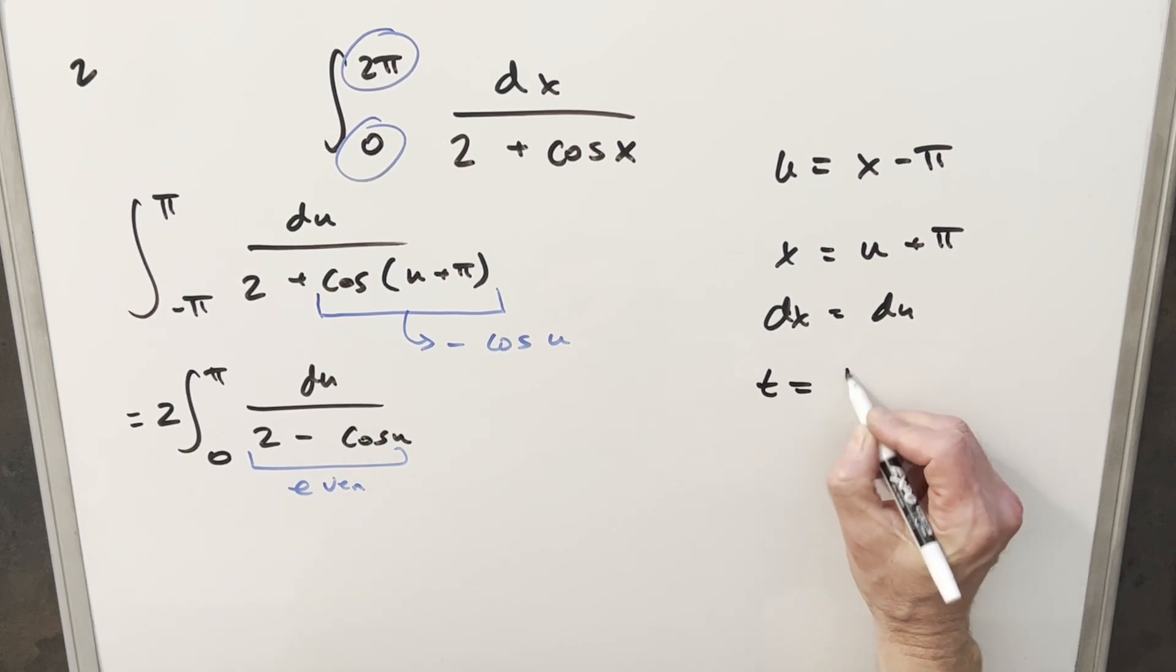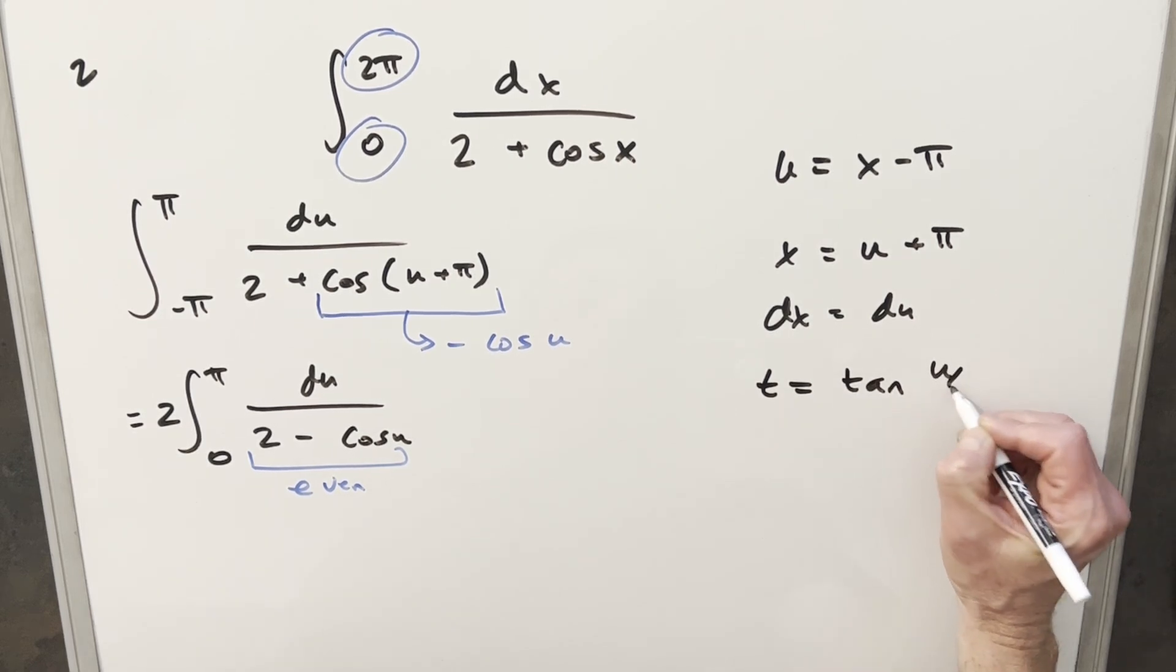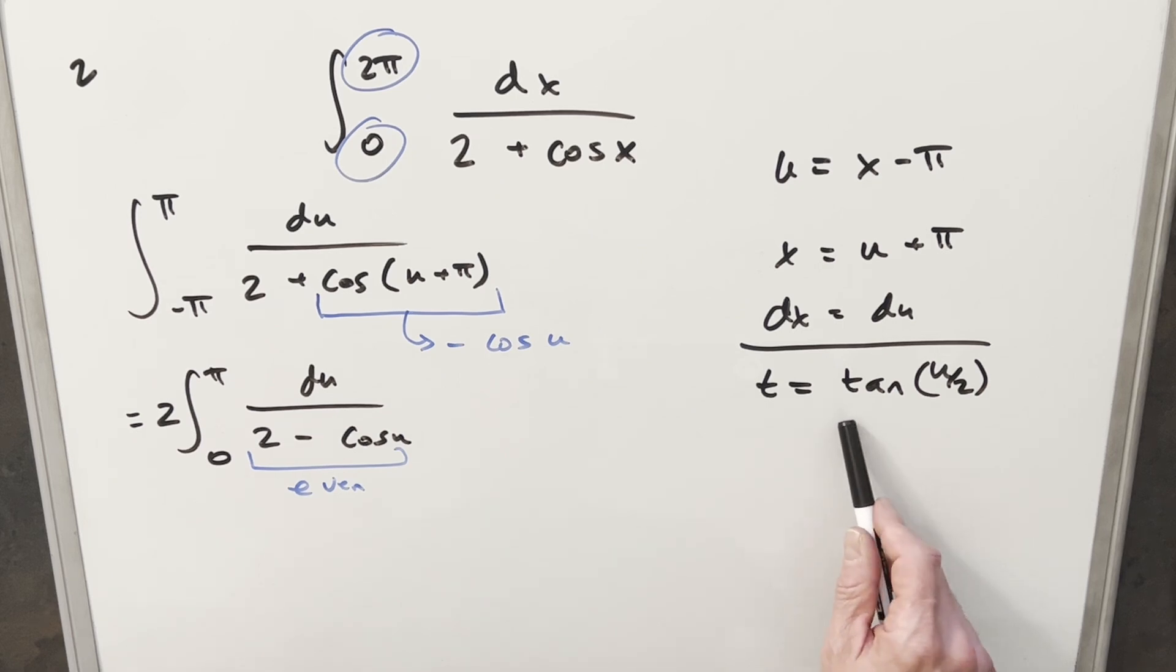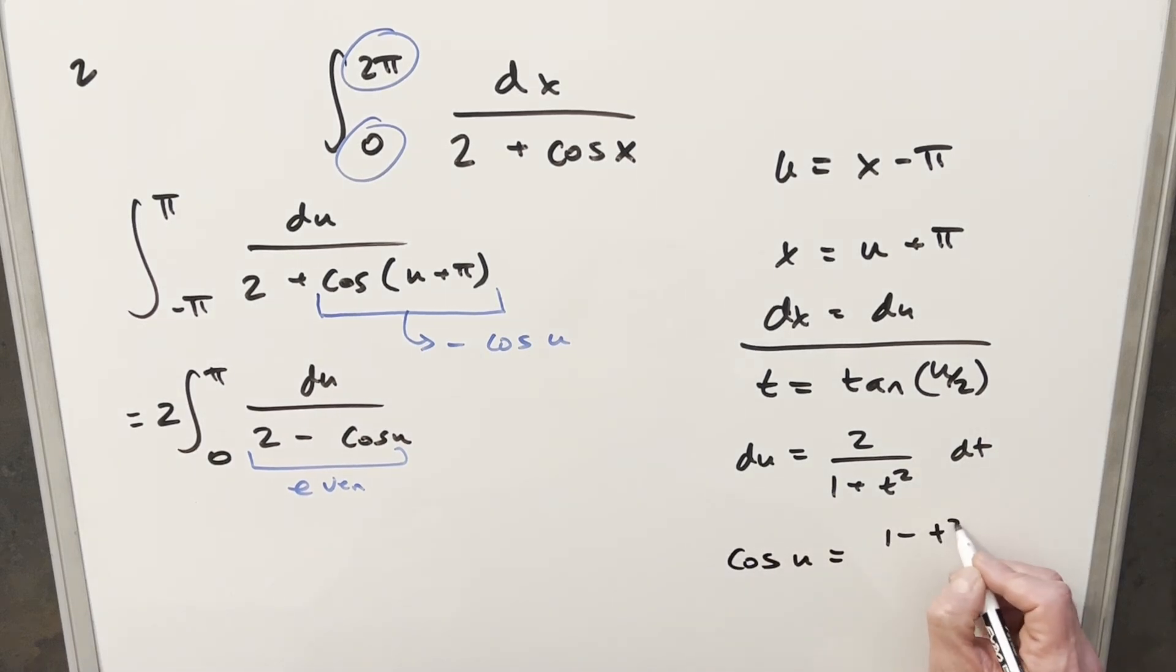So I'm going to take my t and we'll say t is going to be tan of u over 2. And I've done videos in the past deriving all the formulas related to the half angle substitution. So I'm not going to derive those again, but I'll just provide them here. And I'll also provide a link in the description if you want to check out those other videos. But what you can do from this is derive a value for du. And that's just going to be 2 over 1 plus t squared dt. And you also can derive a value for sine of u and for cosine of u. So our value that we need for cosine of u, this is just going to be 1 minus t squared over 1 plus t squared.